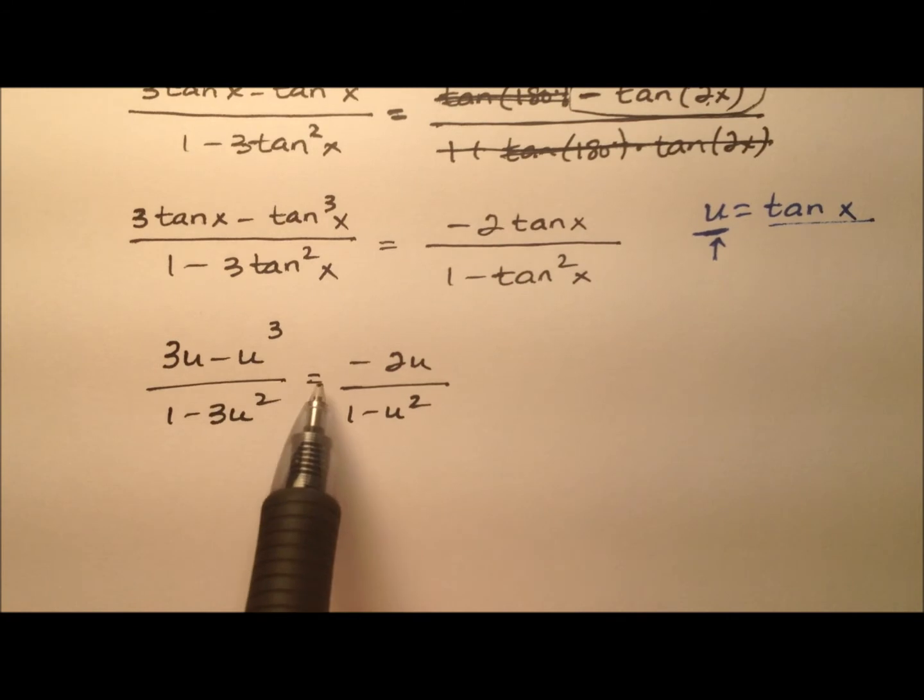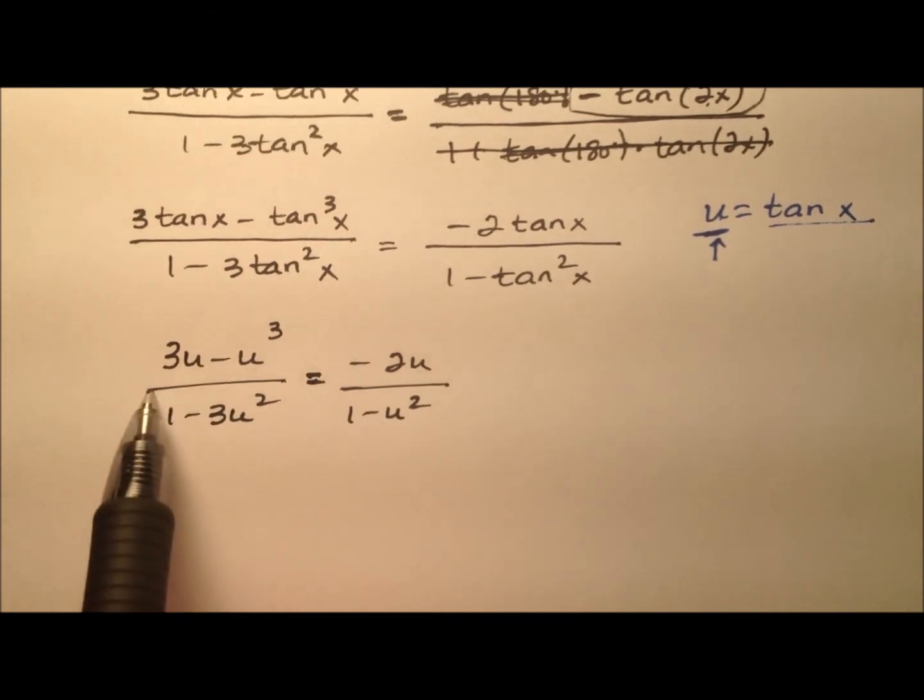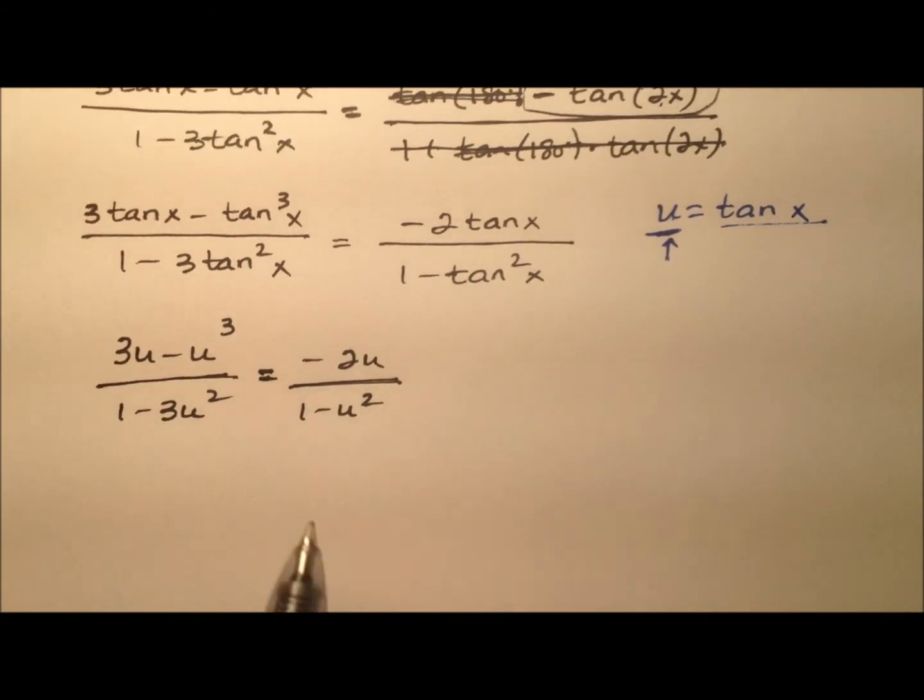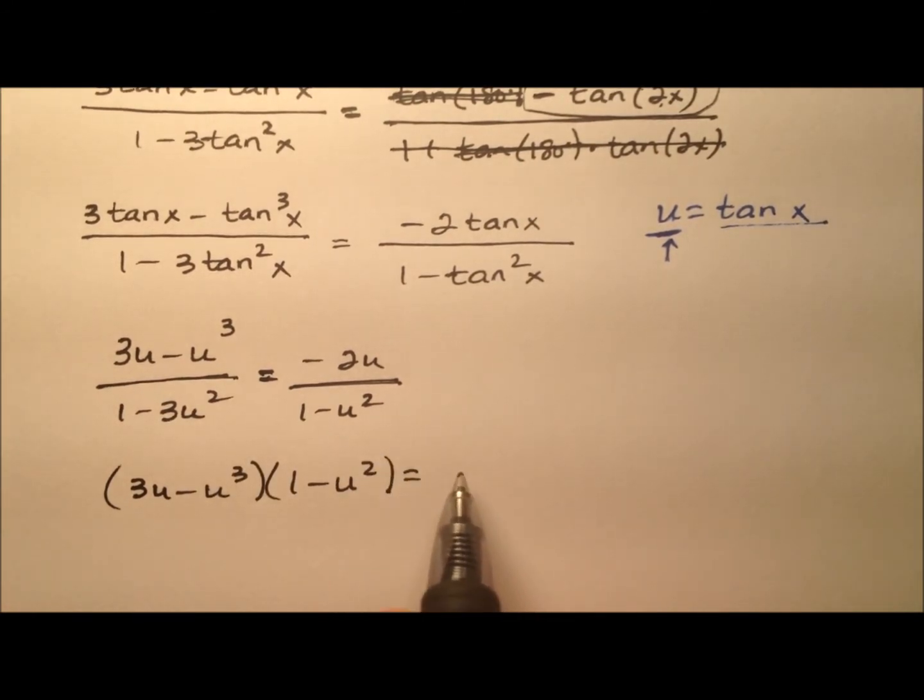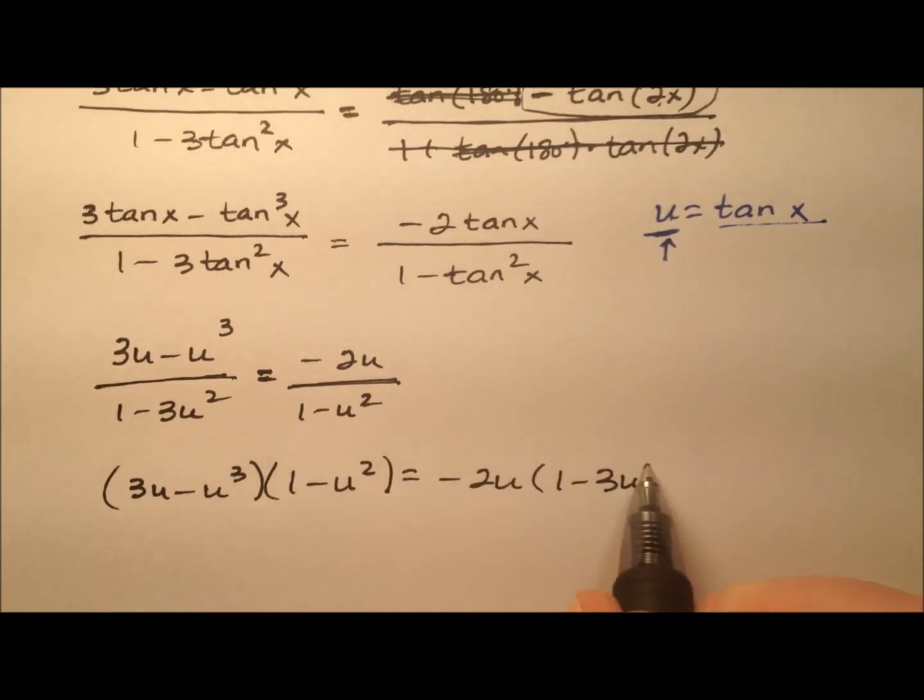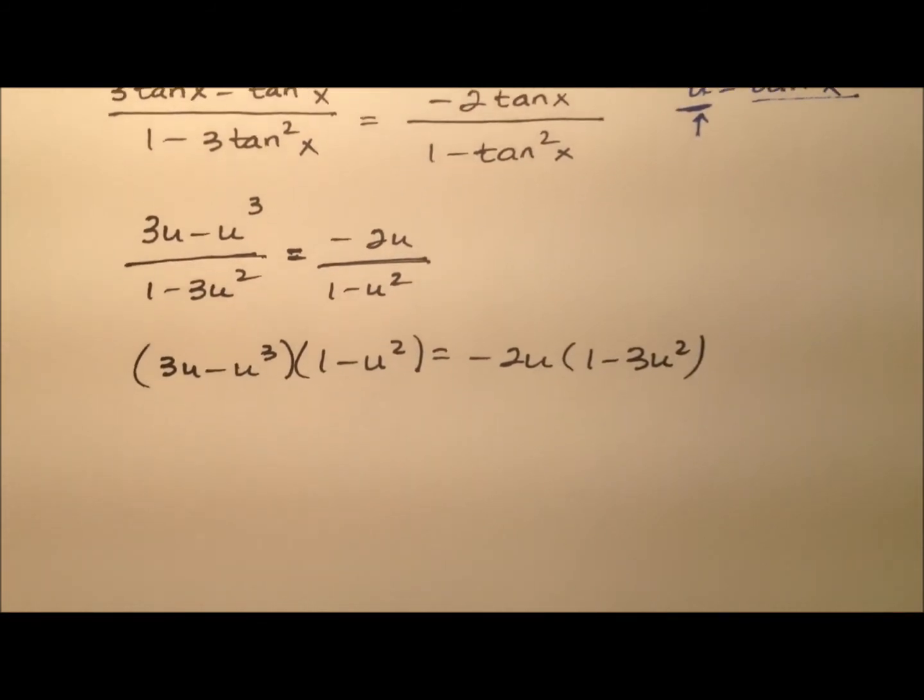Okay, looks like we have a nice proportion here. This fraction is equal to this fraction. So let's do the cross products. So it looks like we have 3u minus u cubed times 1 minus u squared. And that will equal negative 2u times 1 minus 3u squared.